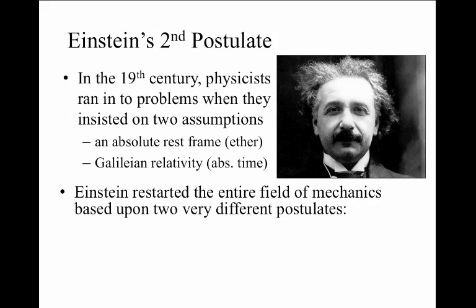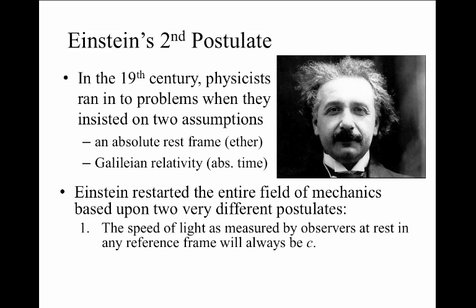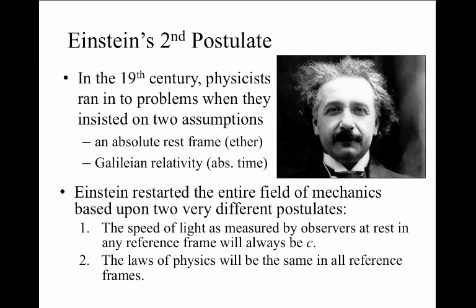Einstein restarted the formulation of all mechanics based on two very different postulates. The first was that all observers would agree on the speed of light. It would always be c, irrespective of what frame of reference the observer is in. The second was that the laws of physics would be the same in all reference frames.